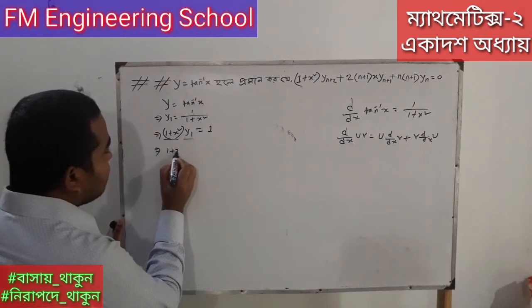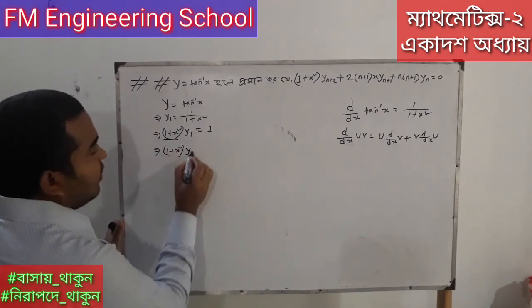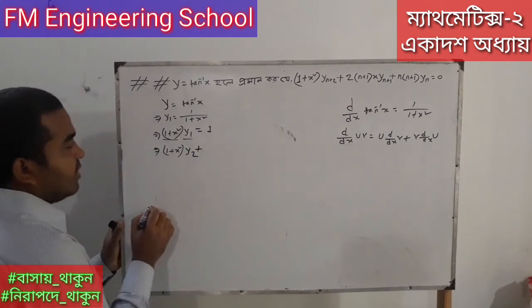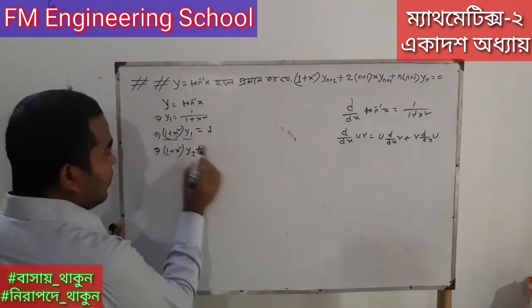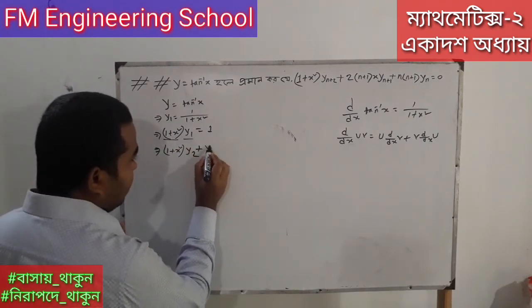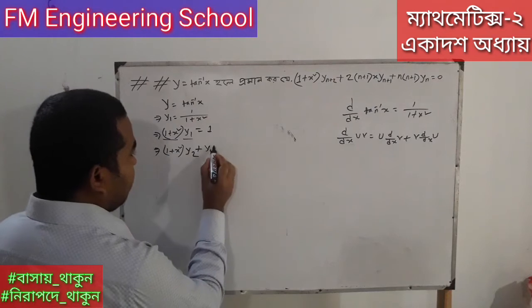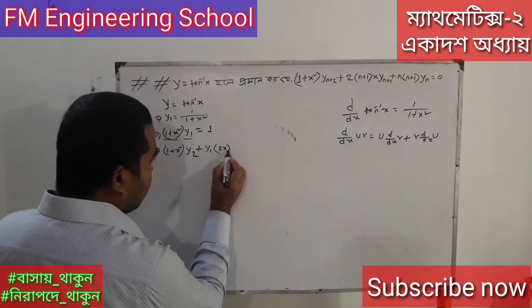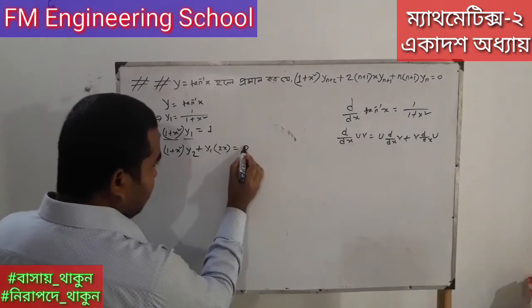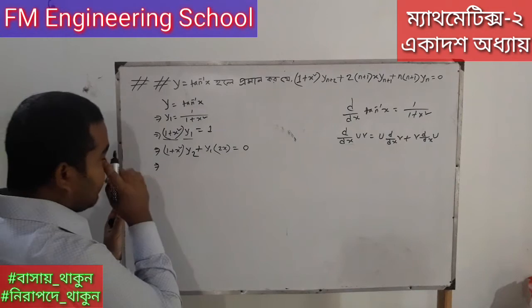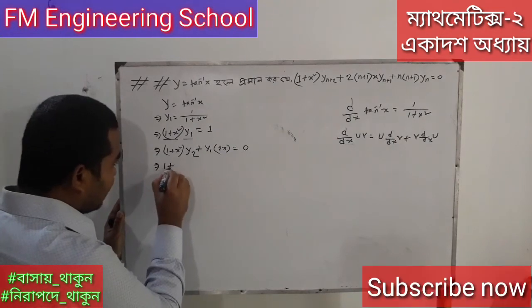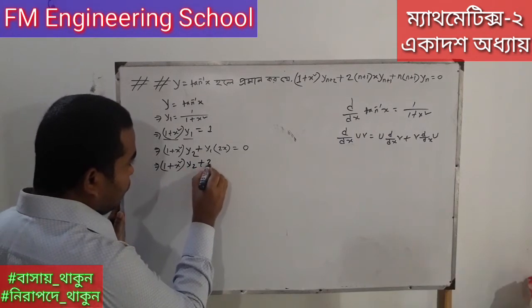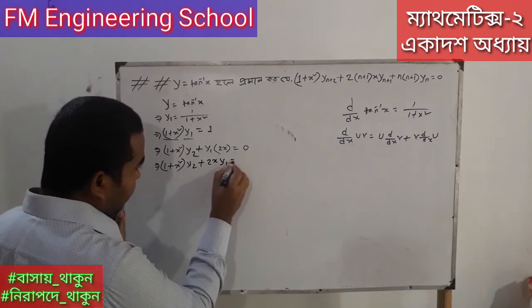Differentiating again: (1 + x²) y₂ plus 2x y₁. We add y₁ and y₂, and since d/dx of (1 + x²) is 2x, we arrive at: (1 + x²) y₂ + 2x y₁ = 0.